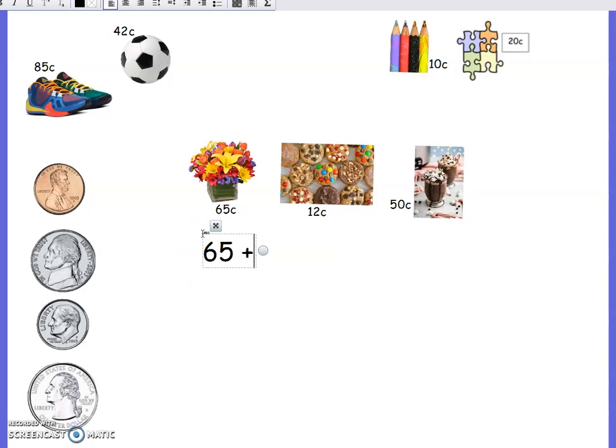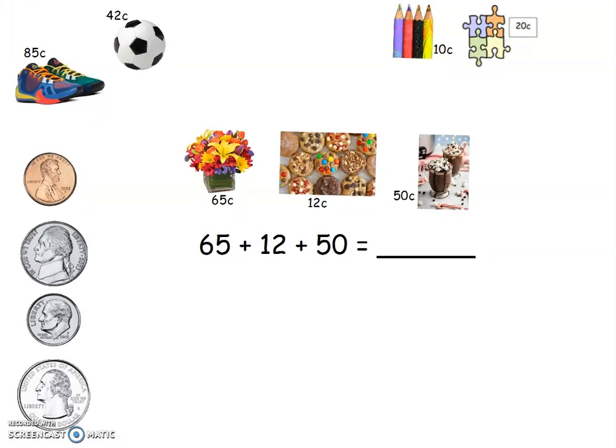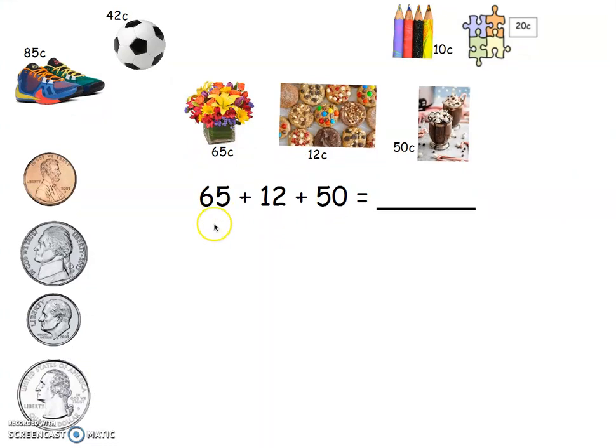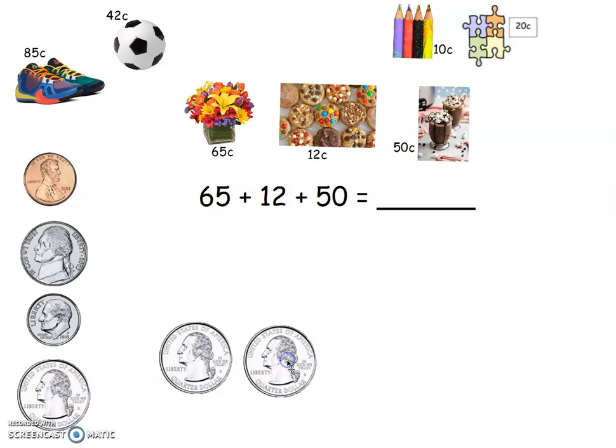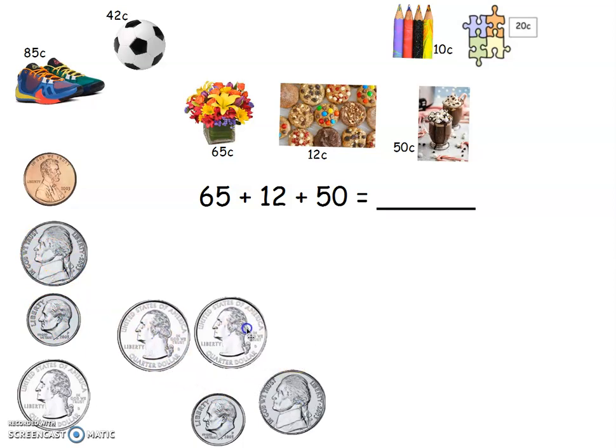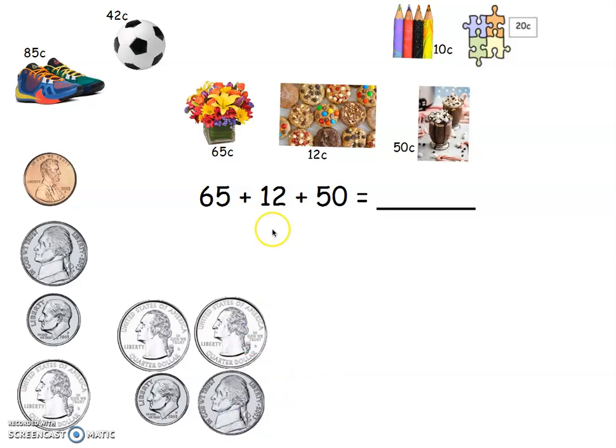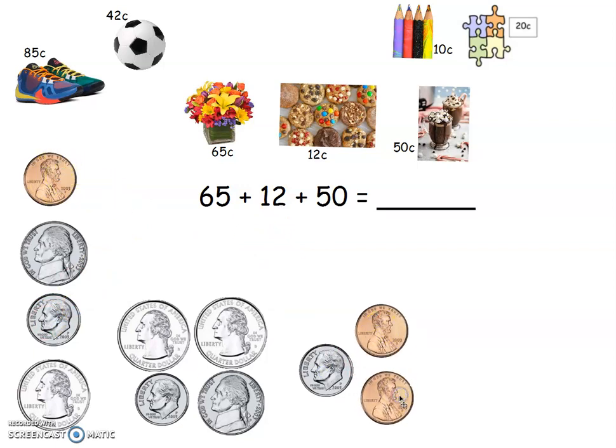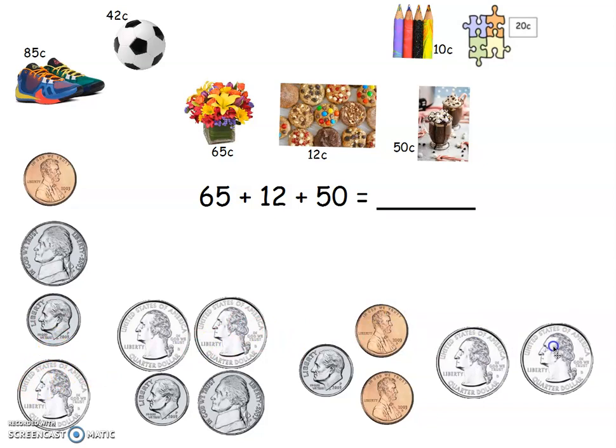So write your equation: 65 plus 12 plus 50 equals. We'll do it both ways. I'll go up here first. 65 cents: so I have 25, 50, 60, 65. And then I have 12, which is a group of 10, 11, 12. And then I have 50. I could do five tens, or I could also just do I know my quarters: 25, 50.